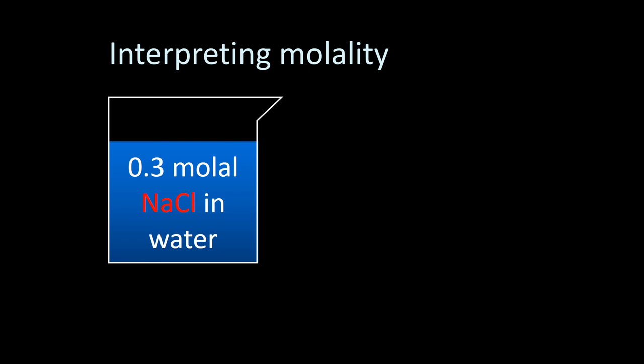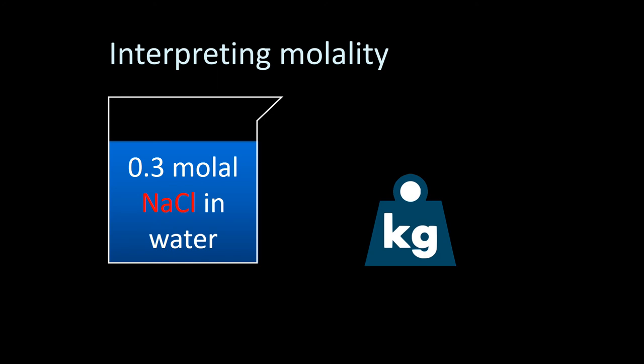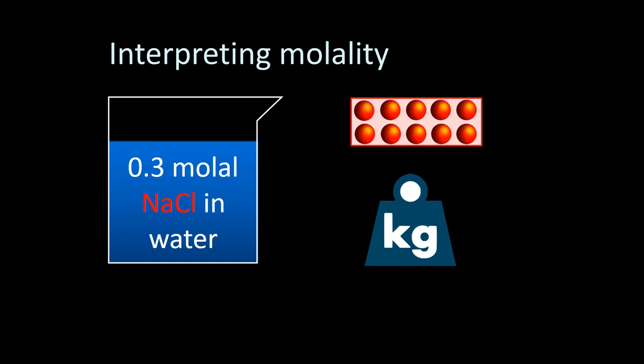It's important to know how to interpret a molality value. For example, a 0.3 molal solution of NaCl in water means that for every kilogram of water, we have 0.3 moles — three-tenths of a mole — of NaCl. So for every kilogram of water, there are 0.3 moles of NaCl contained in it. That's what that number means.